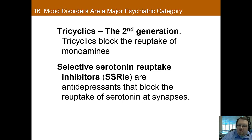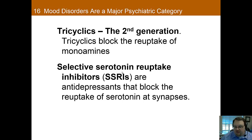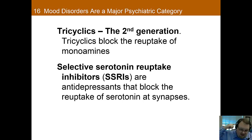Selective serotonin reuptake inhibitors — SSRIs — are the more modern antidepressants, things like Zoloft or Paxil. They work a little differently from tricyclics. While tricyclics block the reuptake of all monoamines, SSRIs are more selective — they just block serotonin reuptake. This selectivity leads to fewer side effects compared to tricyclics, because when you're blocking more than you need to, you change the ecosystem more than necessary.